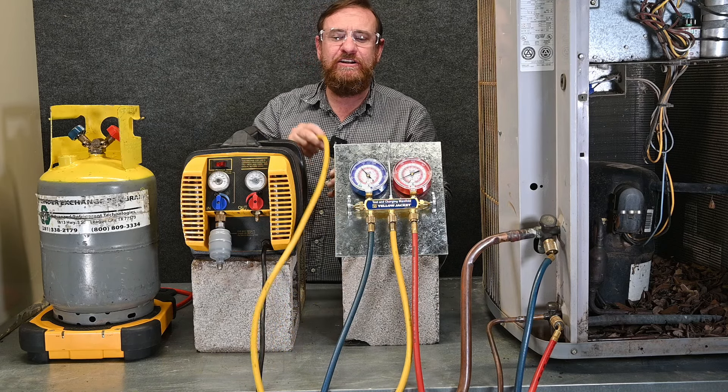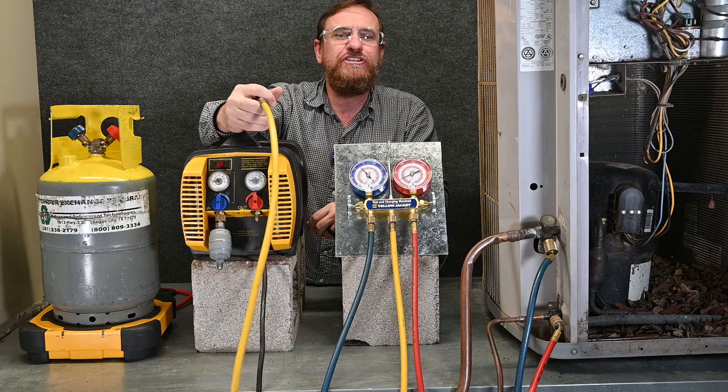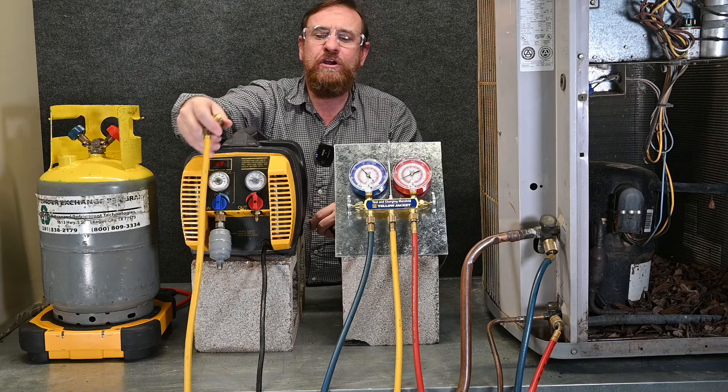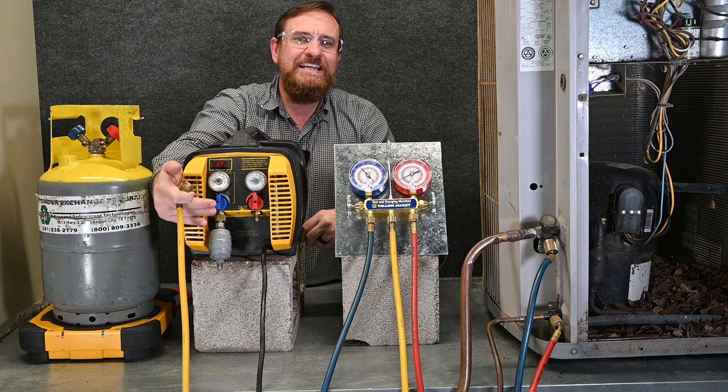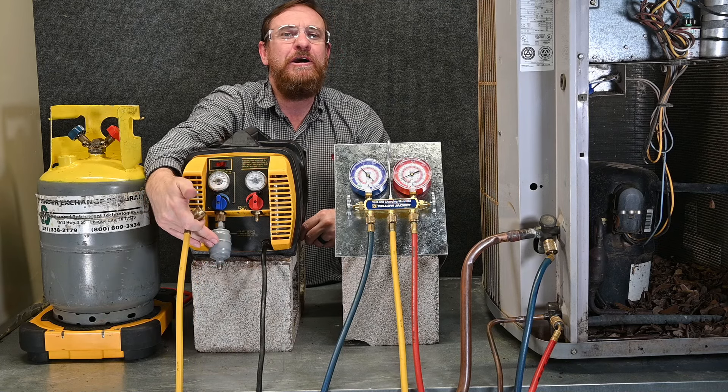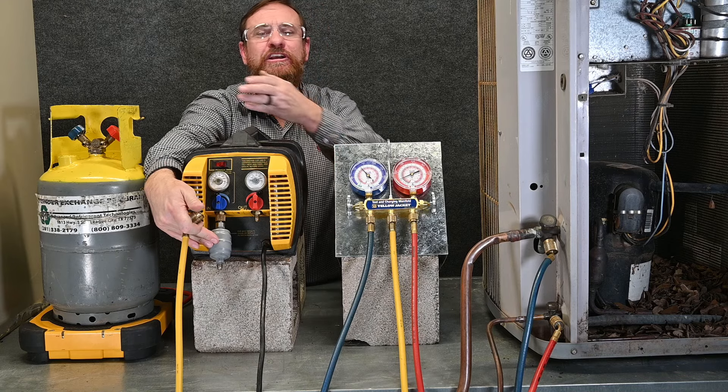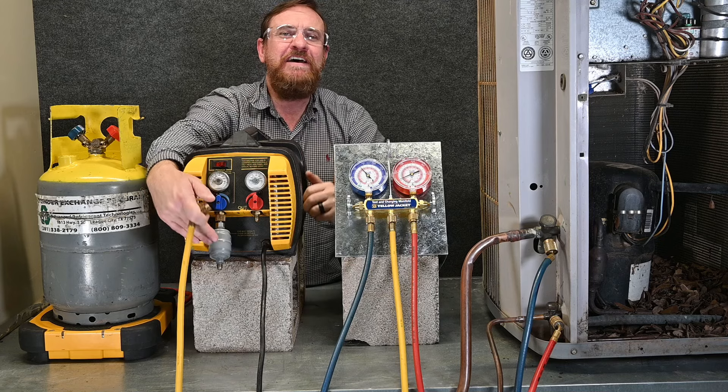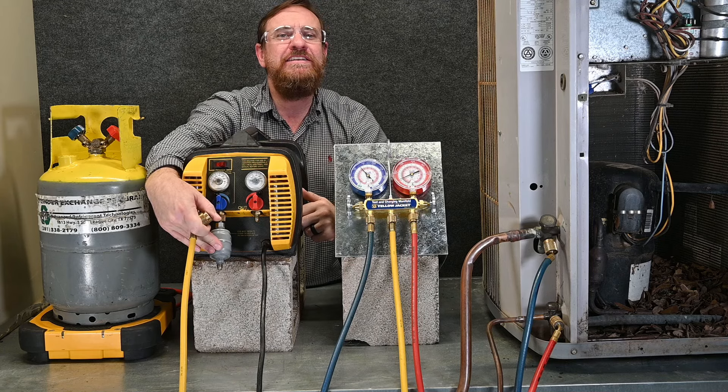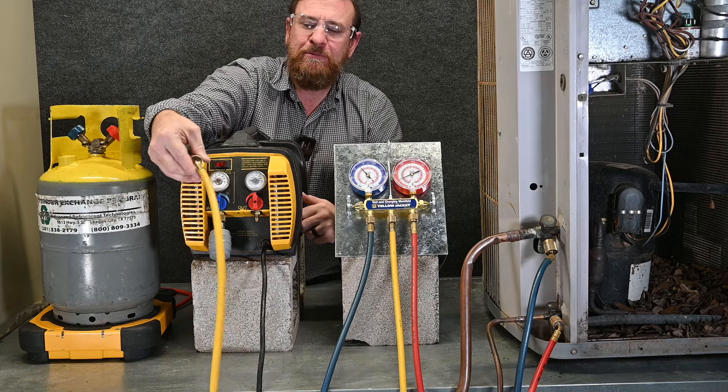We already have our manifold gauge set hooked up. So we have our center hose, our service hose with our low loss fitting. We're going to hook that to the in port of our recovery machine. And notice where it says in, we also have this filter dryer right here. This is going to help protect and clean the refrigerant as it goes into the machine. And even if I'm not going to recycle this refrigerant, the fact that it's protecting my machine is an important step. So we're going to hook this up with our two finger rule.